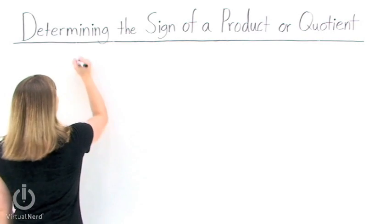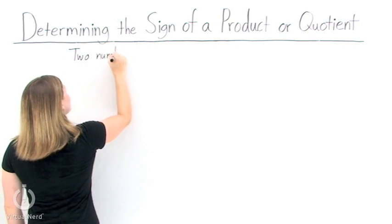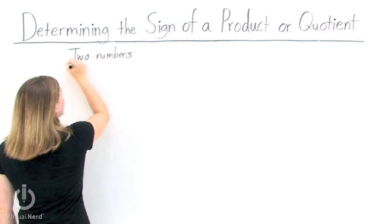When determining the sign of a product or quotient, we first need to look at a simple situation. Let's look at a situation where we're only multiplying or dividing two numbers.